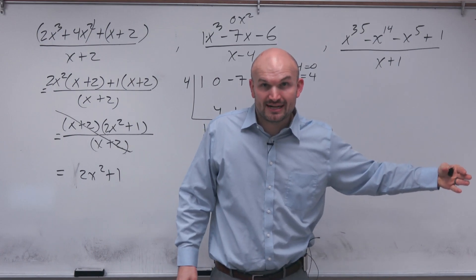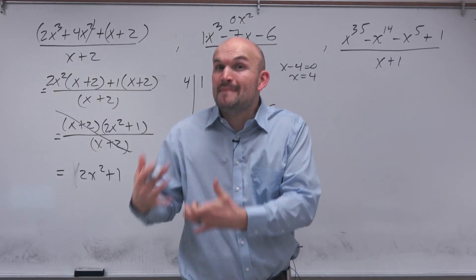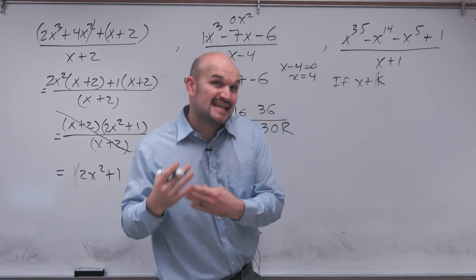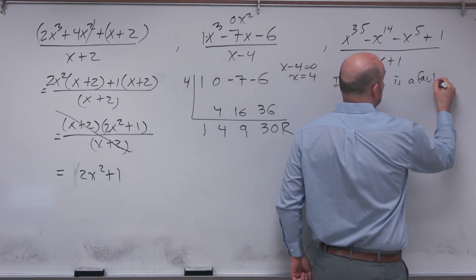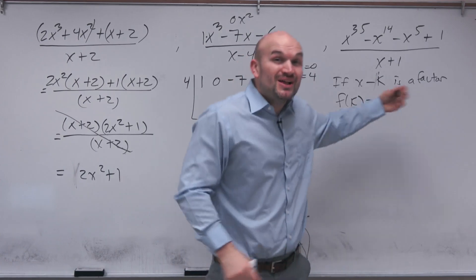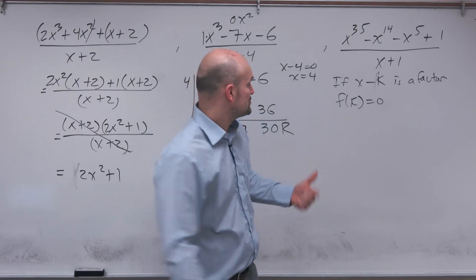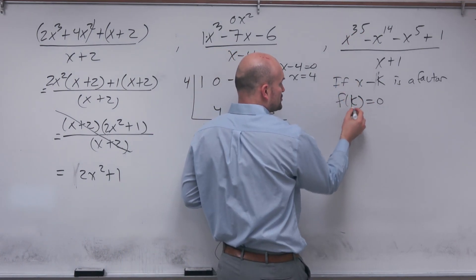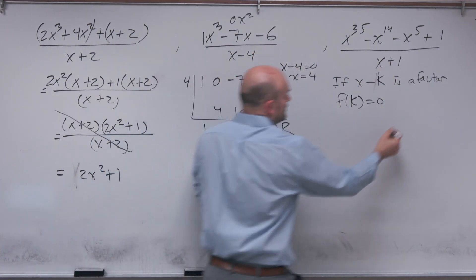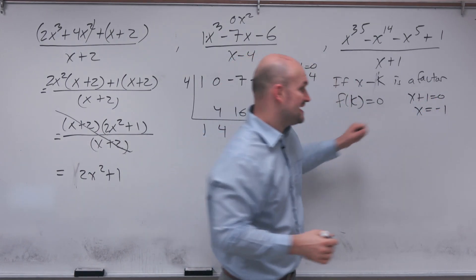The last technique that I want to get into is instead of actually factoring, instead of using long division, the last technique is to use the remainder theorem. And what the remainder theorem says is if x plus k is a factor, then f of k is going to equal 0. Then what I can do is if I can plug in k into the polynomial, into my numerator and get 0, then we know we have a factor. So what I'm going to do is take my numerator, which will be a polynomial function, and I'm just going to plug in k. Well, in this case, my k is just like the k we did over here. Set it equal to 0, and that's going to be my k.